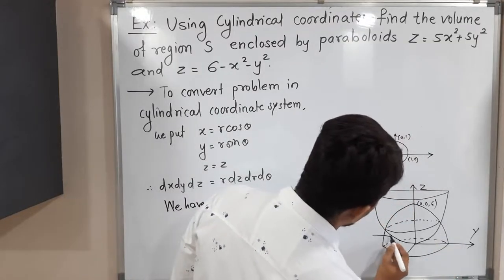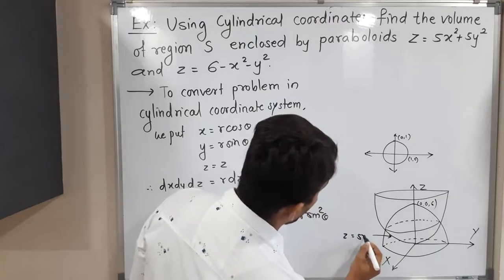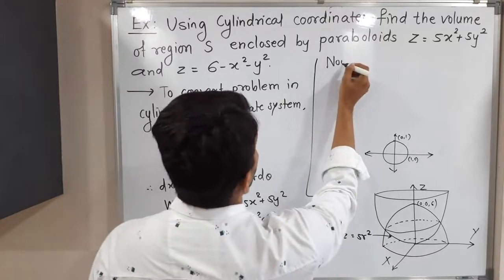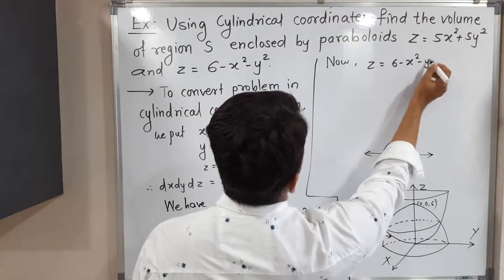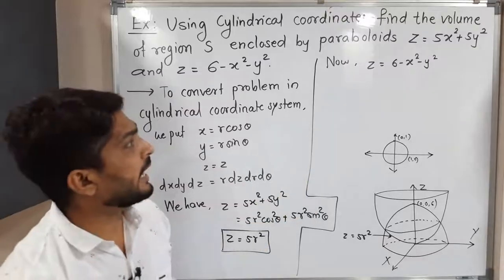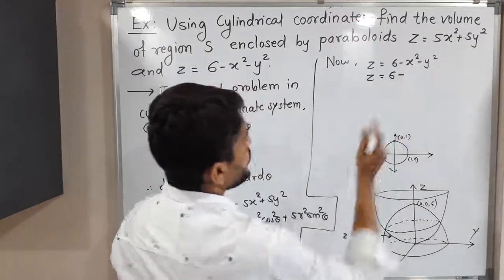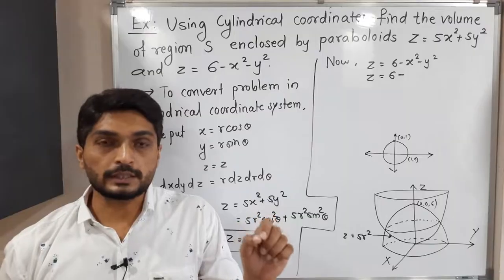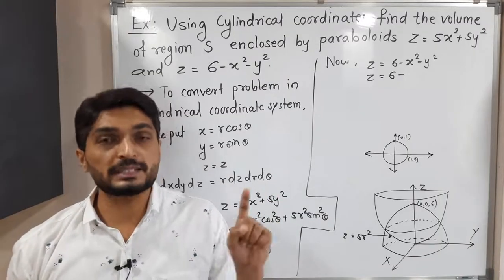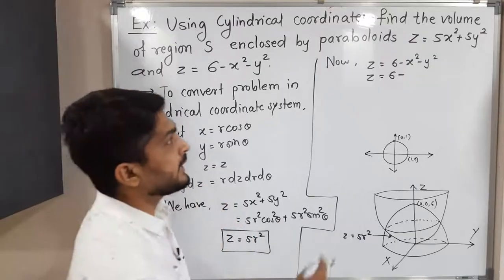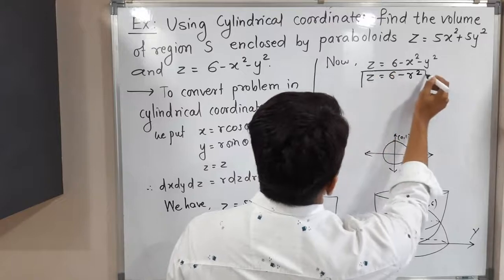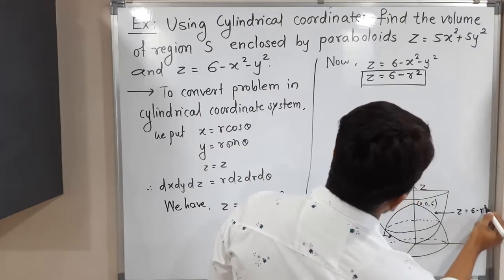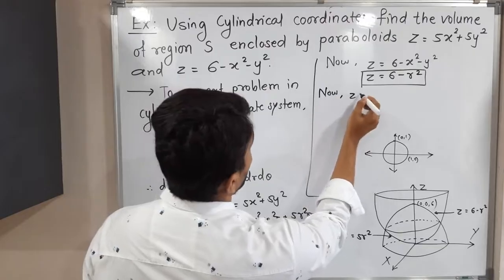Now the second equation z = 6 - x² - y²: substituting, z = 6 - (r²cos²θ + r²sin²θ) = 6 - r²(cos²θ + sin²θ) = 6 - r². So the equation of the second paraboloid in cylindrical coordinates is z = 6 - r². Now let us set up the limits.